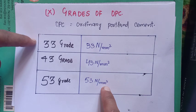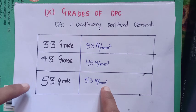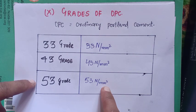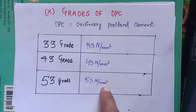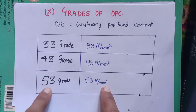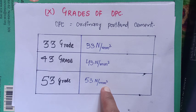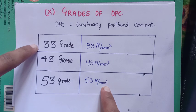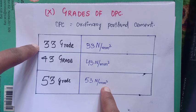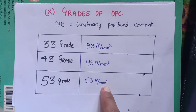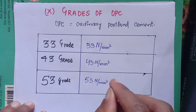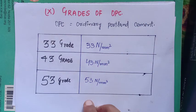Here you can see this is the lowest strength of cement and this is the highest strength of cement. If you are constructing a structure in which high quality cement is used, you can use the 53 grade of cement. And if you are using a lower quality concrete, you would use 33 grade of cement. These are the grades of ordinary Portland cement.